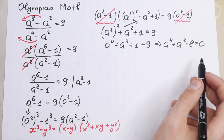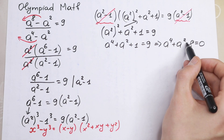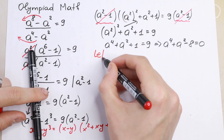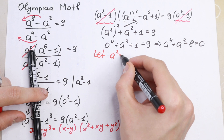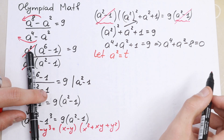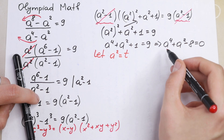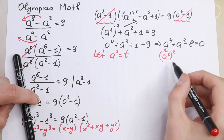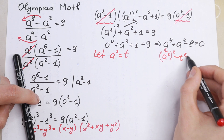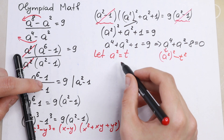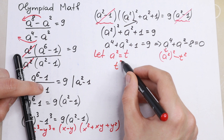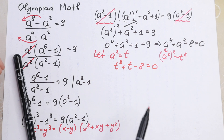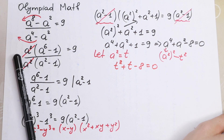This equation is not a classic quadratic — we have a fourth power — so we need a substitution. Let a² = t. Then a⁴ becomes t², so our equation becomes t² + t - 8 = 0.